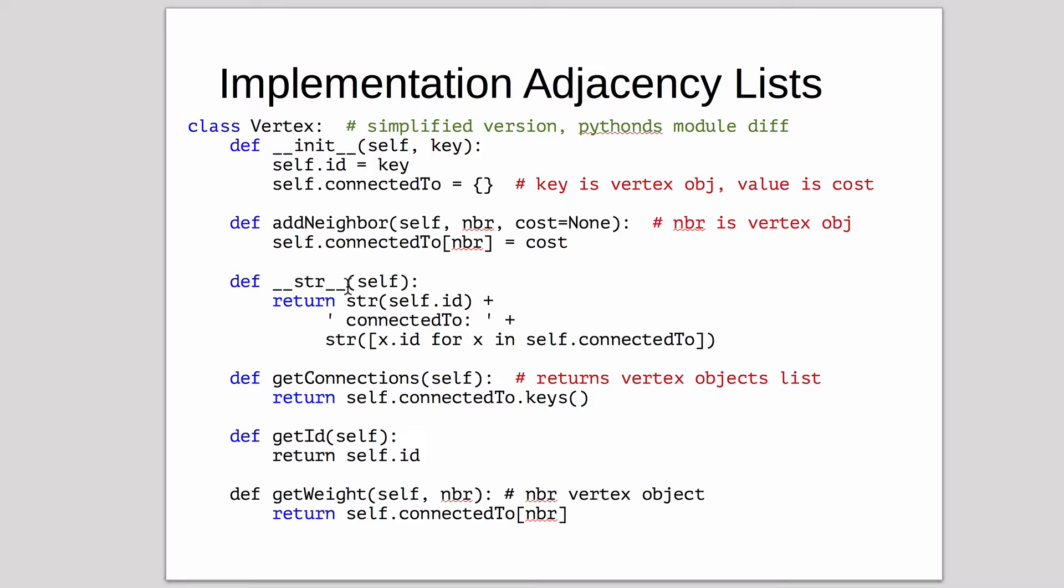There's a string method. So if we print out a vertex, it prints something. It prints out the ID it's connected to, and it gives a list of IDs.